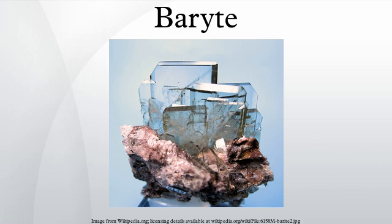Barite and celestine form a solid solution. The radiating form, sometimes referred to as Bologna stone, attained some notoriety among alchemists for the phosphorescent specimens found in the 17th century in Bologna by Vincenzo Casciarolo.